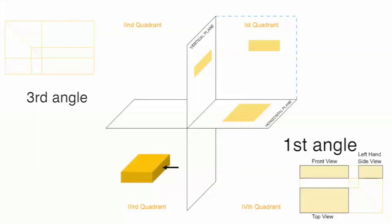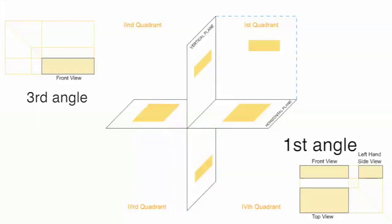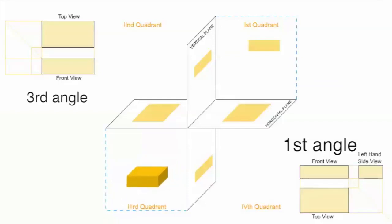In third angle, when the observer sees from the front, he projects on the front plane. When he sees from the top, he projects on the top surface, so in third angle the top view goes up and the front view comes down. When he sees from the left, he projects on the left side, so in third angle the left hand side view is on the left.